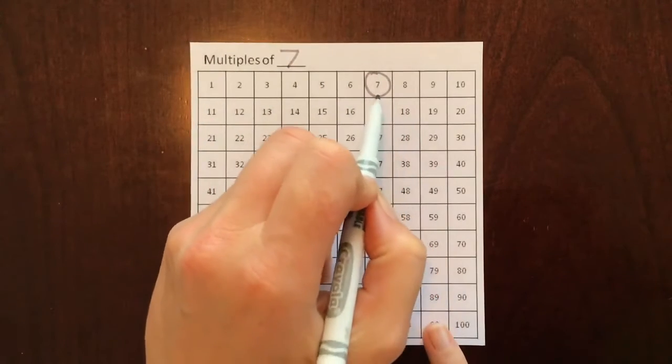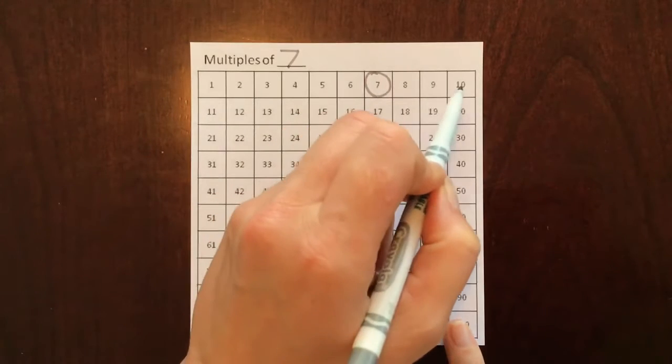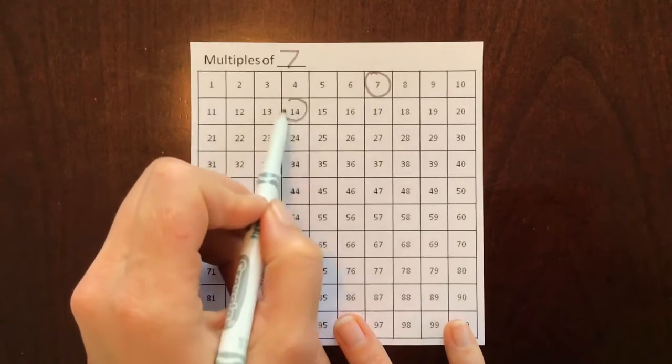Okay, we'll start here at seven and count another multiple of seven. Ready? Go. One, two, three, four, five, six, seven. Let's circle that.